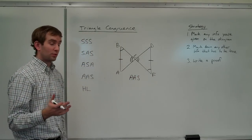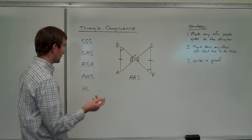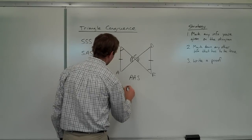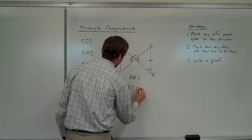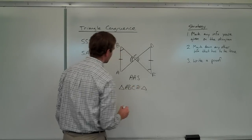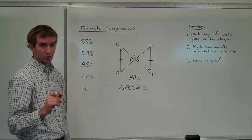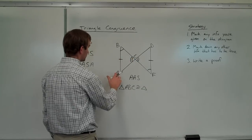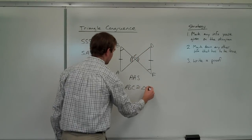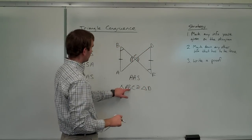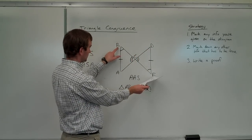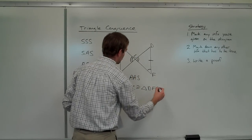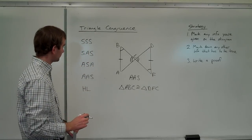A lot of times you're going to be asked to write the congruence statement, and here's what that looks like. Triangle ABC is congruent to triangle... and remember, order is important. A corresponds with D, so triangle D. Then we go to B next, which means F corresponds with B. And then finally C. So the congruence statement is triangle ABC is congruent to triangle DFC.